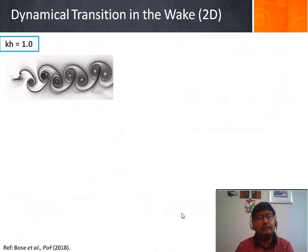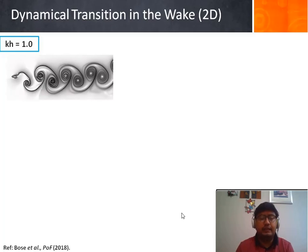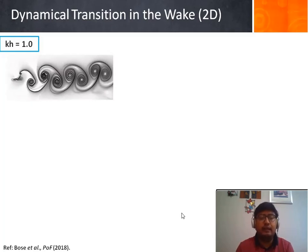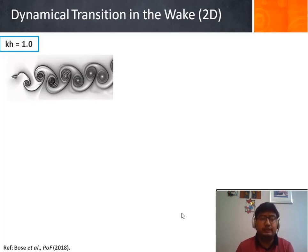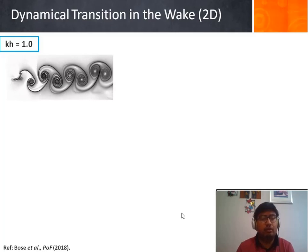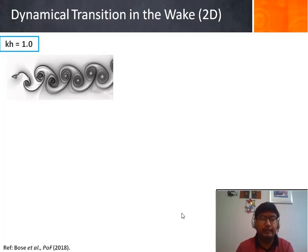Flapping airfoils can generate a wide variety of wake patterns in 2D depending on the frequency and amplitude of the motion. In this case, the non-dimensional plunge velocity KH, which is a product of reduced frequency K and the non-dimensional stroke amplitude H, is considered to be the control parameter to classify the wake patterns.